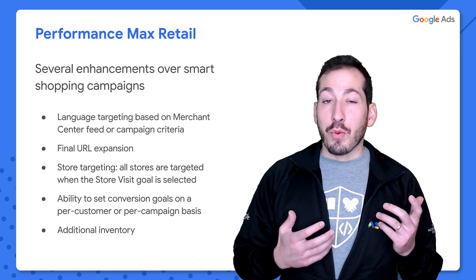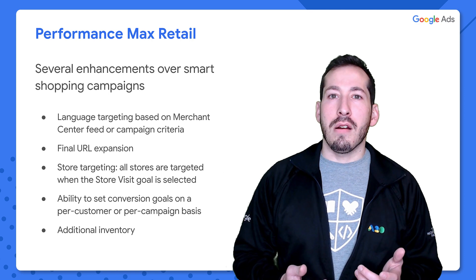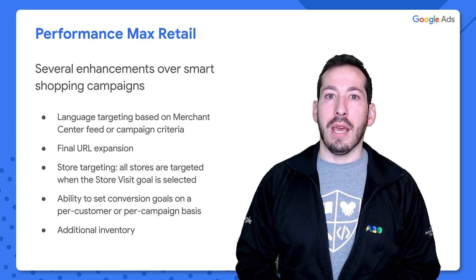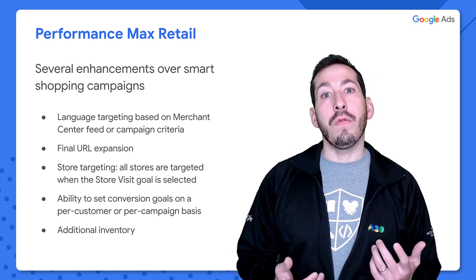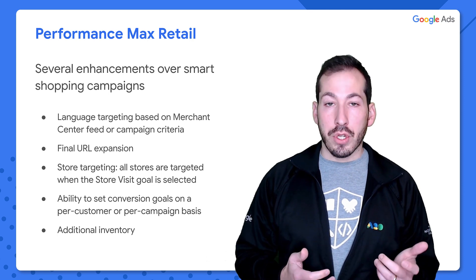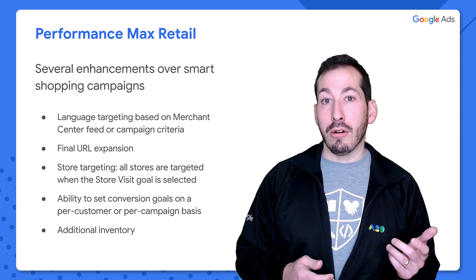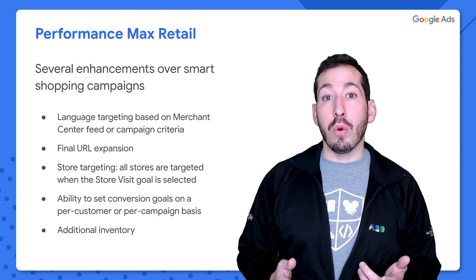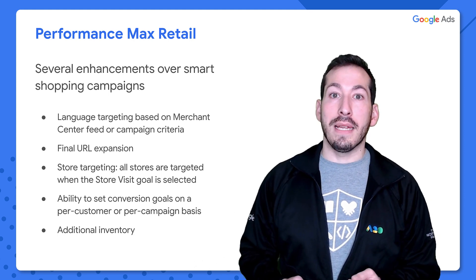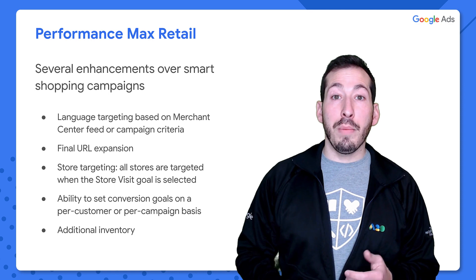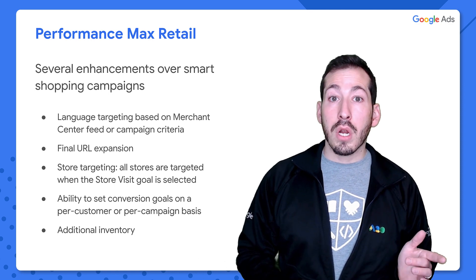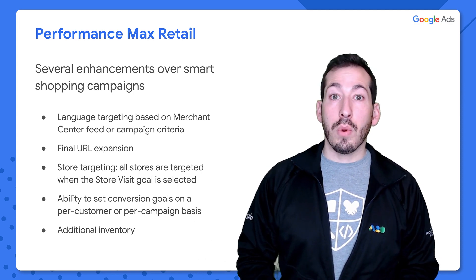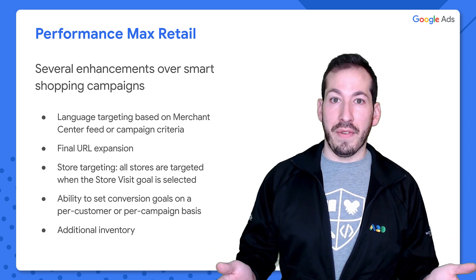Performance Max retail, being the new state-of-the-art technology, offers several enhancements over smart shopping campaigns. For example, they offer language targeting based on merchant center account feeds or campaign criteria, final URL expansion, which we covered in the last episode, store targeting, the ability to set conversion goals on a per-customer or per-campaign basis, as well as several additional forms of inventory.